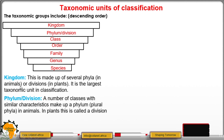The kingdom is made up of several phyla in animals or divisions in plants, and it is the largest taxonomic unit in classification. A number of classes with similar characteristics make up a phylum in animals; in plants it is called a division.